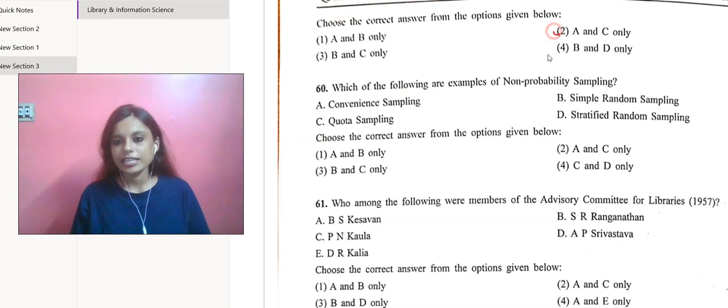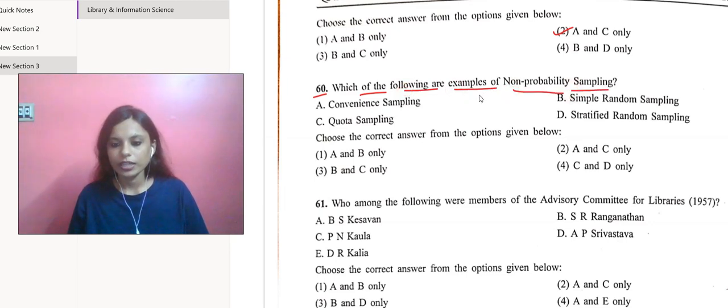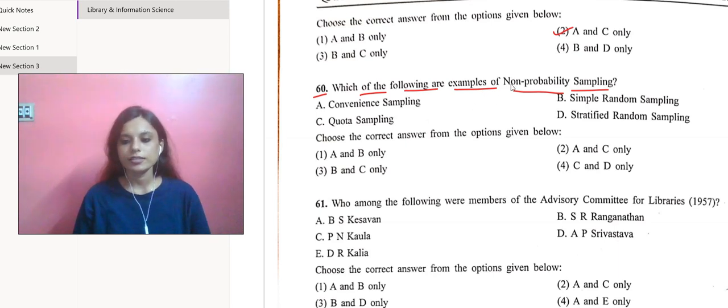Moving to question 60: which of the following are examples of non-probability sampling? Some commonly used non-probability sampling methods include convenience sampling or haphazard sampling, volunteer sampling, judgment sampling, quota sampling, snowball or network sampling, crowd sampling, and web panels. So we are going with A and C only.